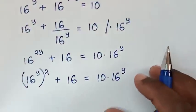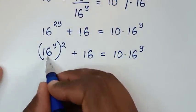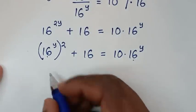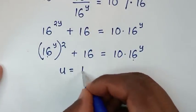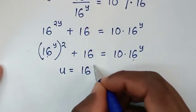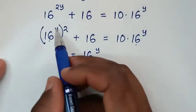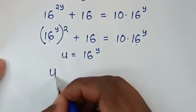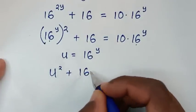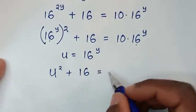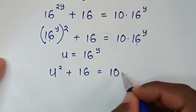Then in the next step, since 16 power of y is common, we let u equal to 16 power of y. So our equation becomes u squared plus 16 is equal to 10 times u, which is 10u.